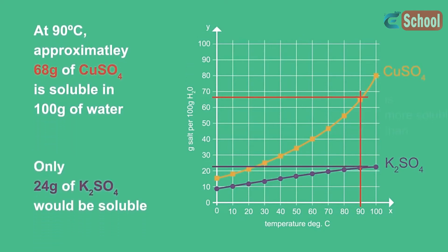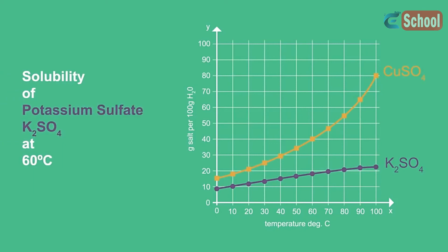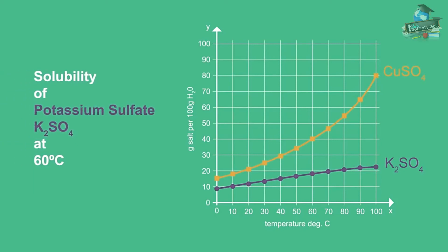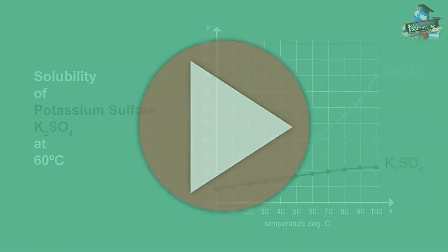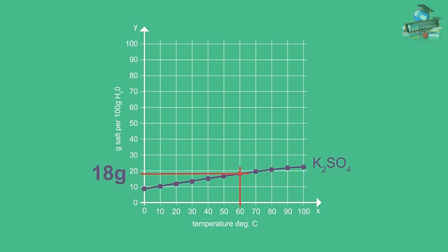To compare, at the same temperature, only 24 grams of potassium sulfate would be soluble in water. Using the provided graph, try to find the solubility of potassium sulfate at 60 degrees Celsius. Pause, try, and continue when ready. If your answer is around 18 grams of potassium sulfate per 100 grams of water, then you would be correct.